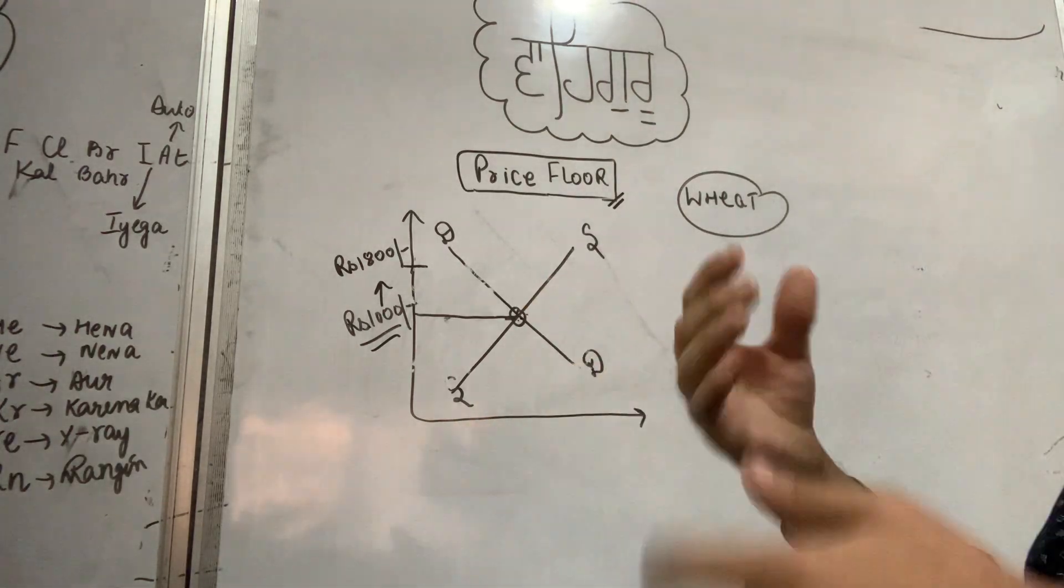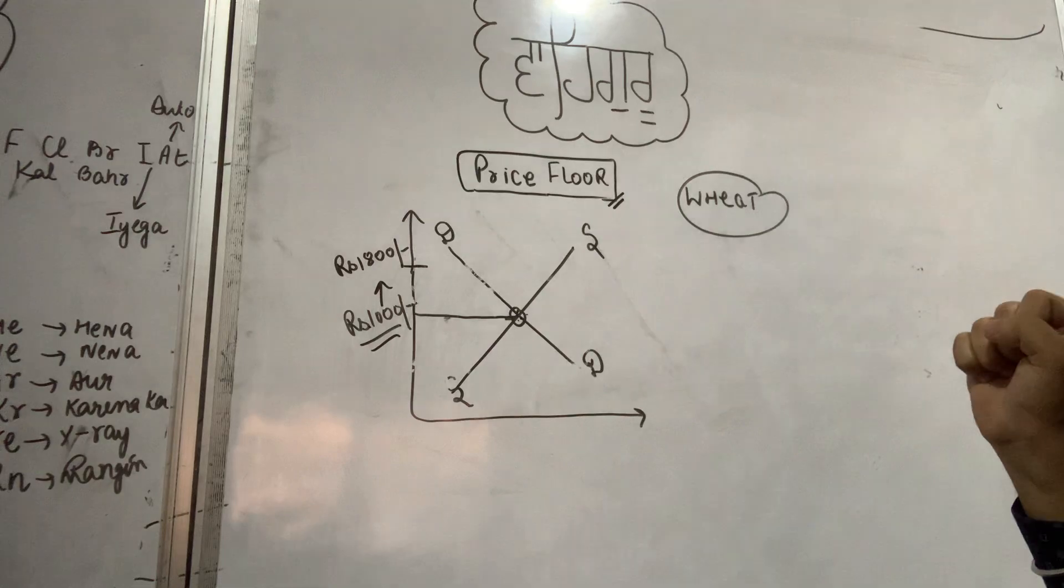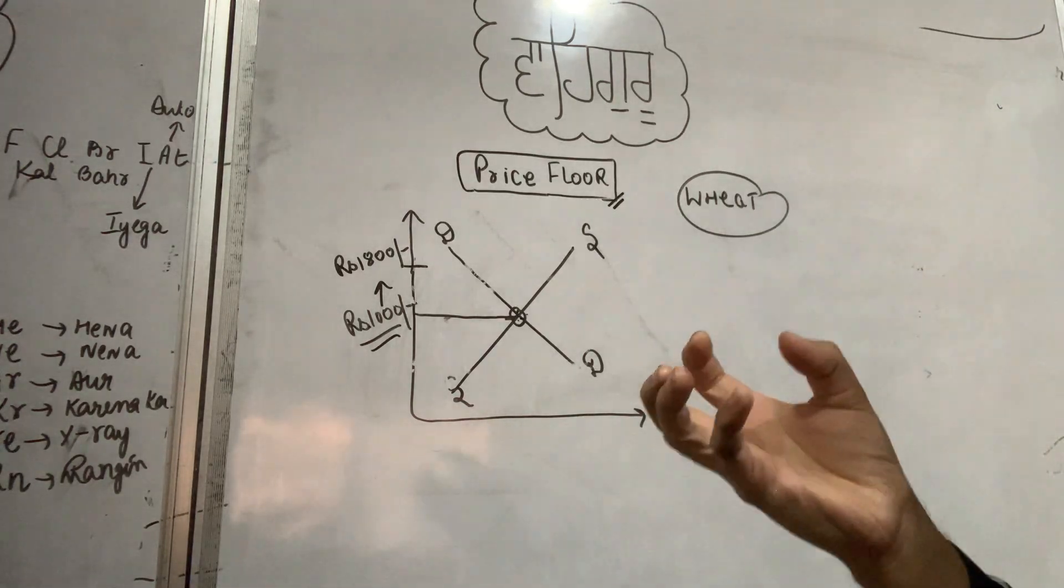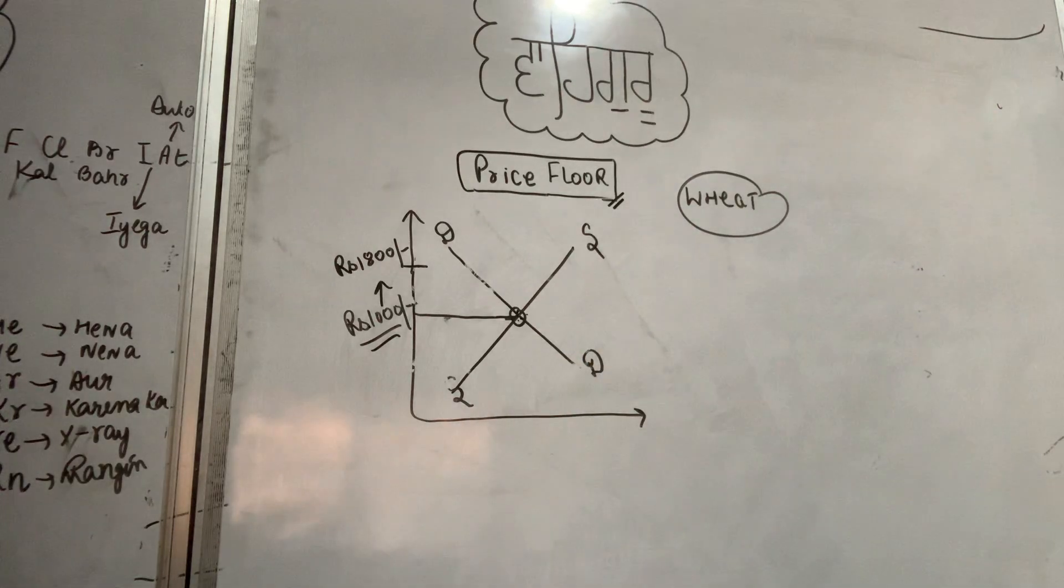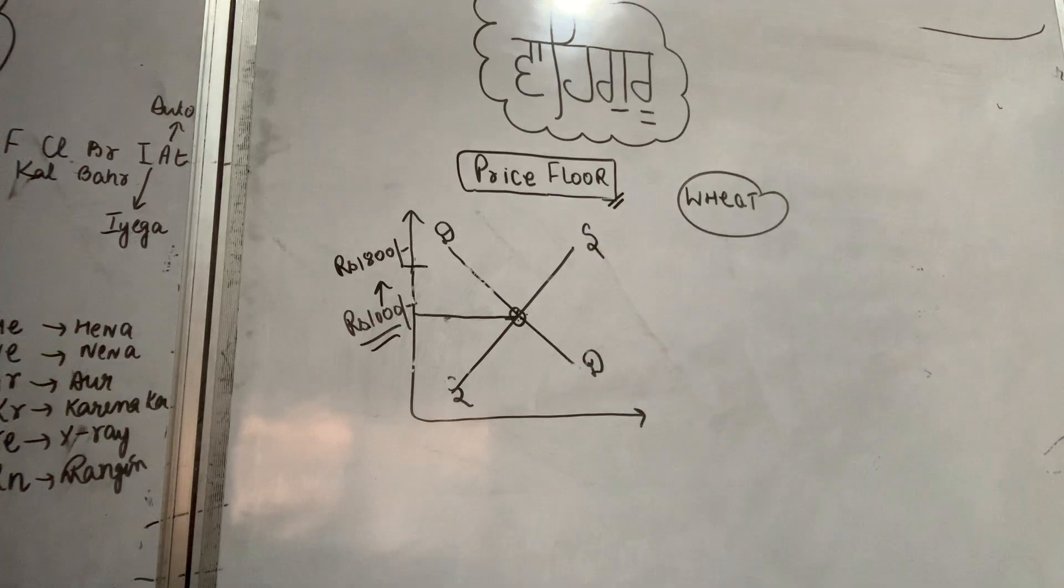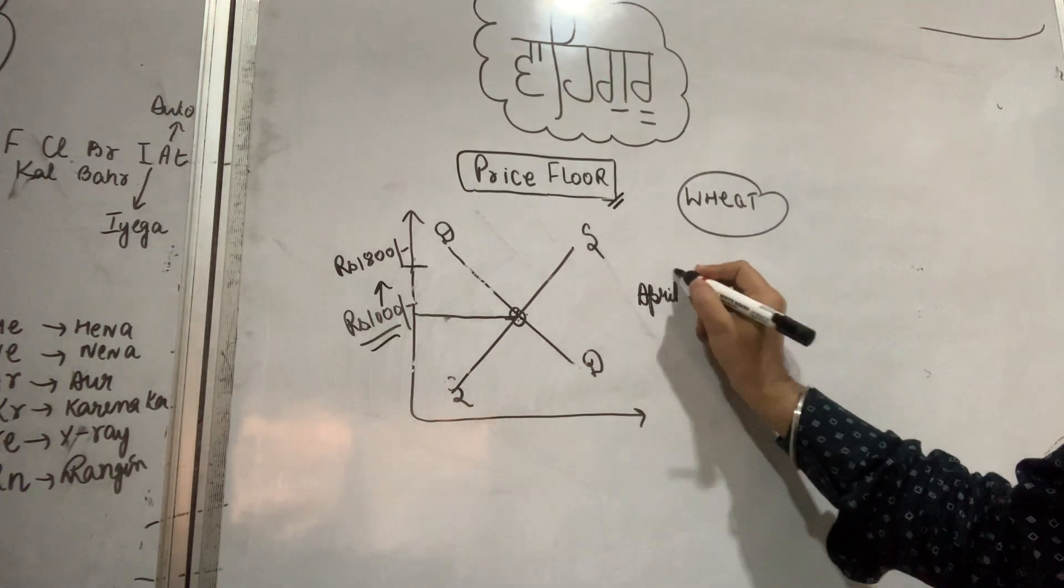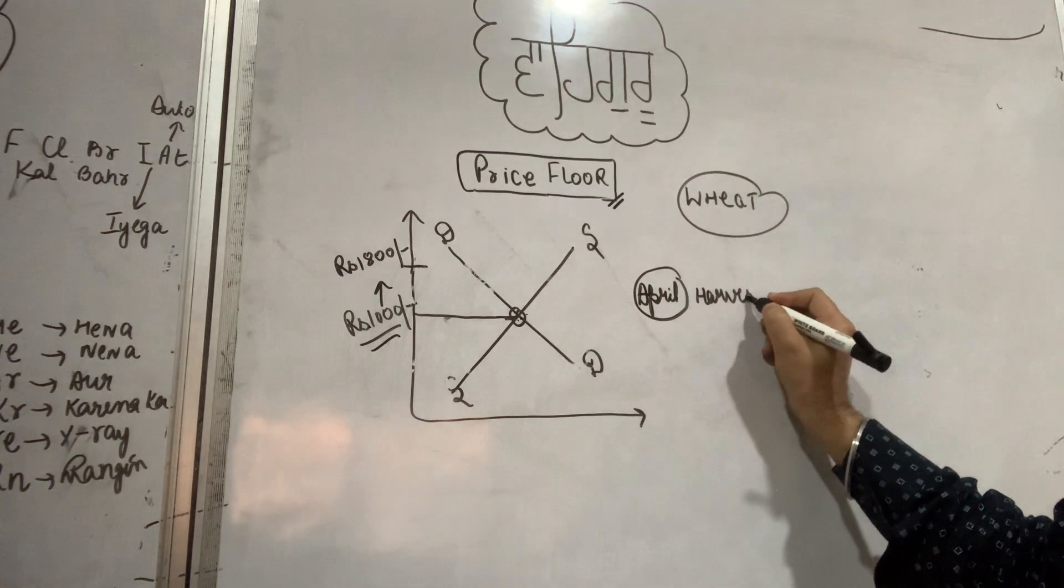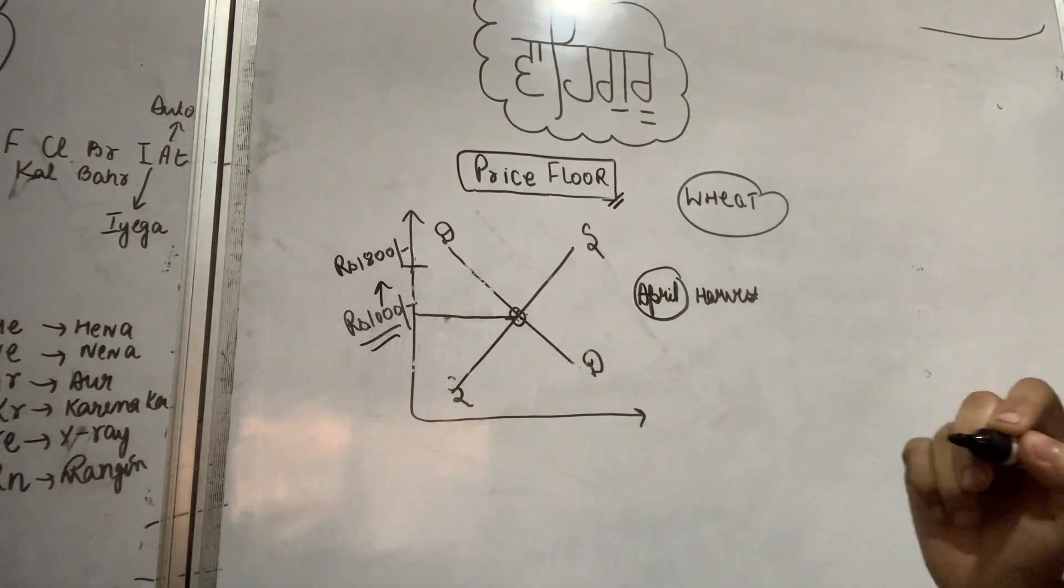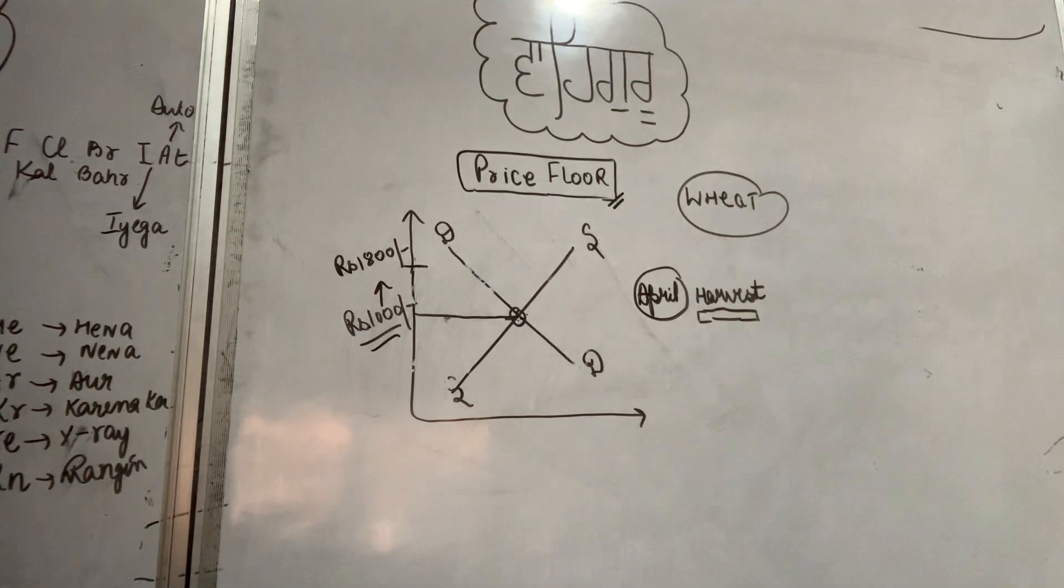The price determined in equilibrium is very low because our agricultural products are harvested once a year. Harvesting happens once a year. But when the wheat harvest happens in April, supply becomes very large, while demand remains stable. Because of increased supply and stable demand, supply increases massively. This causes problems for farmers because farmers don't have storage capacity in India. If all harvest happens in April, they can't wait until September.